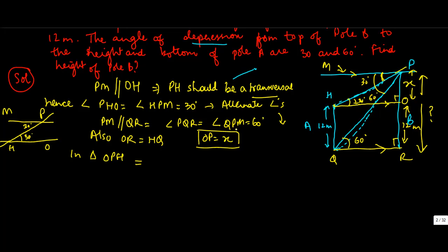If this angle is 30 degrees, let's find the relationship between OP and OH. OP and OH are the side opposite the angle and the side adjacent to it respectively, so we use tangent. Tan 30° = OP / OH = X / OH = 1/√3. Call this equation 1.